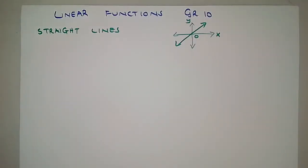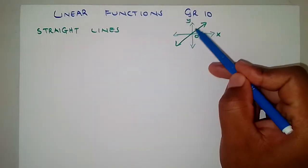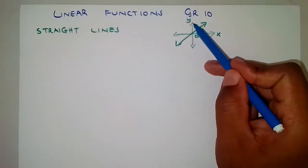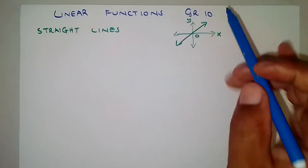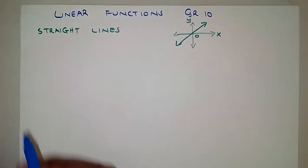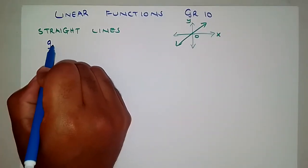Hello, welcome to Academic Coordinates. In this video we are looking at linear functions — sometimes we call them straight lines. Straight lines are lines like these. This is the y-axis, and this is also a straight line — this is the x-axis.